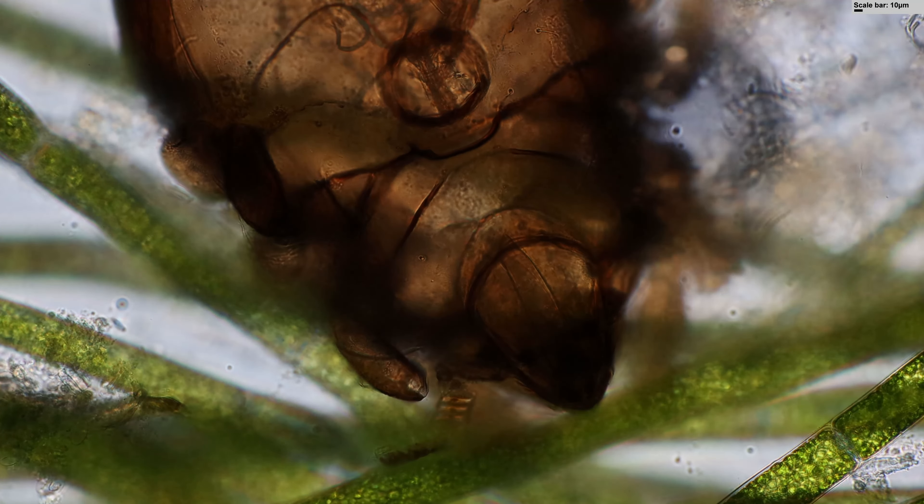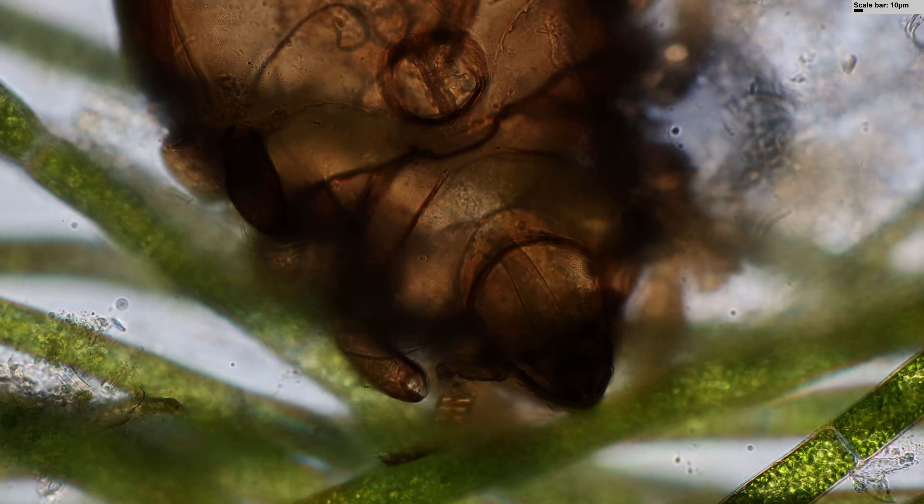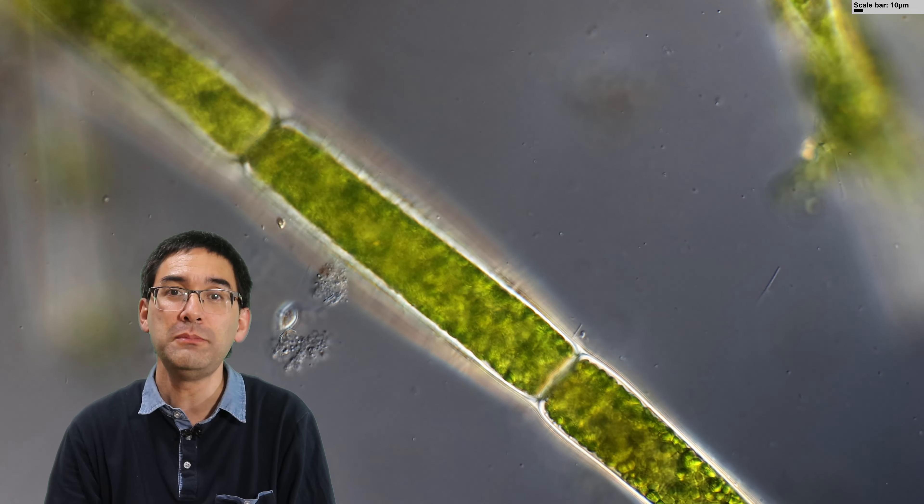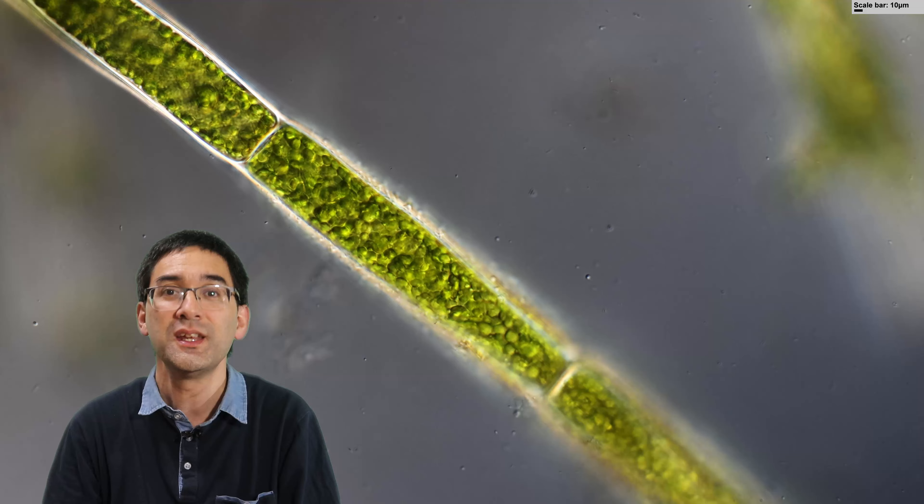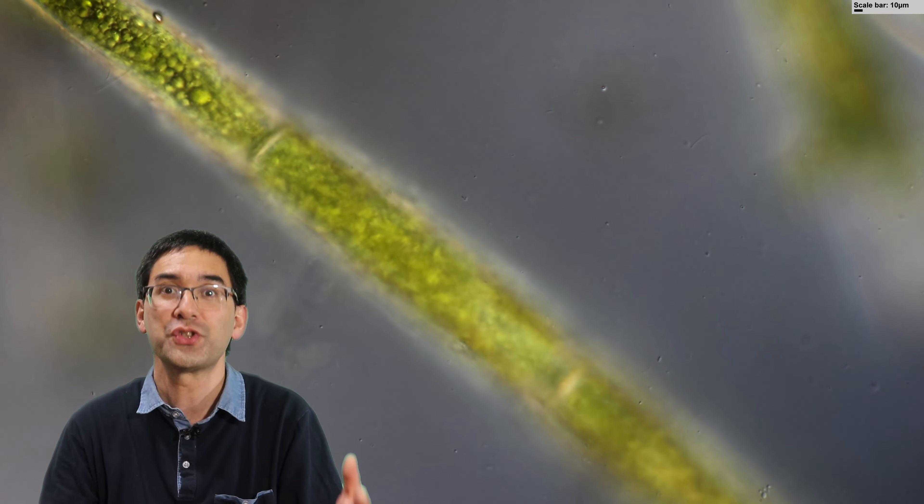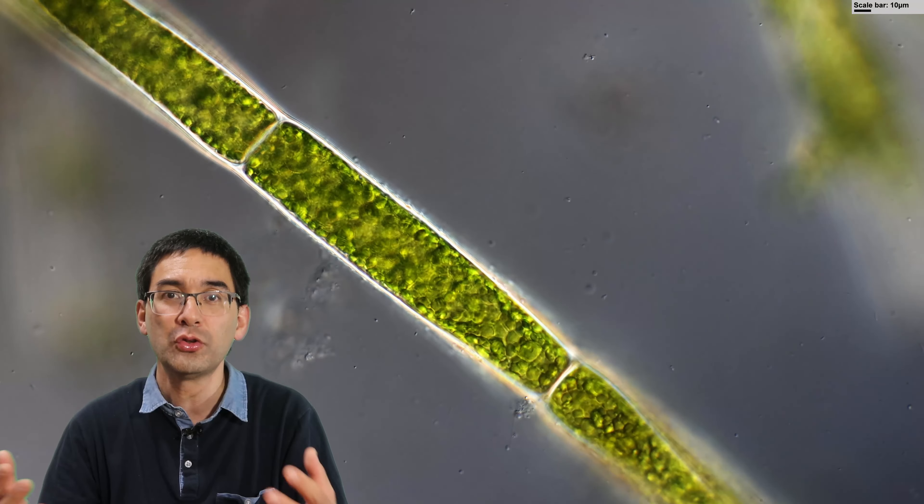When too many algae start to grow, this can indeed be a problem for the pond. Of course, the algae doing photosynthesis produce a lot of oxygen—that's good, but only up to a point, because when they grow too quickly and too much of them, sooner or later they will die off.